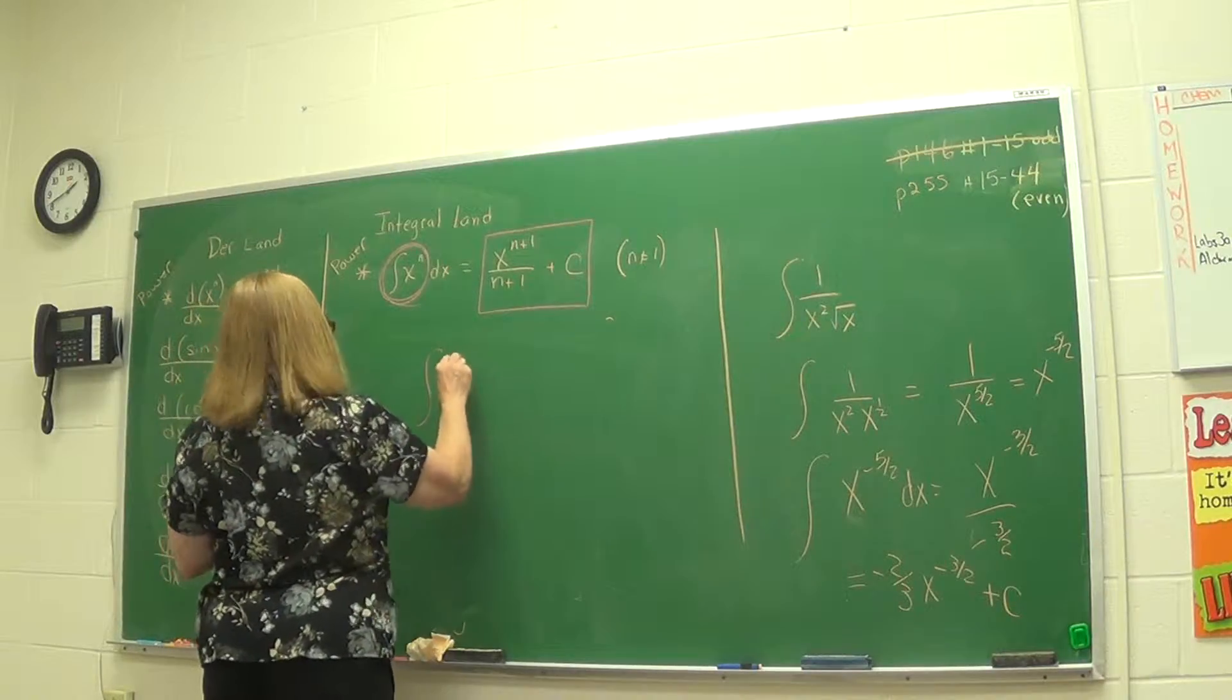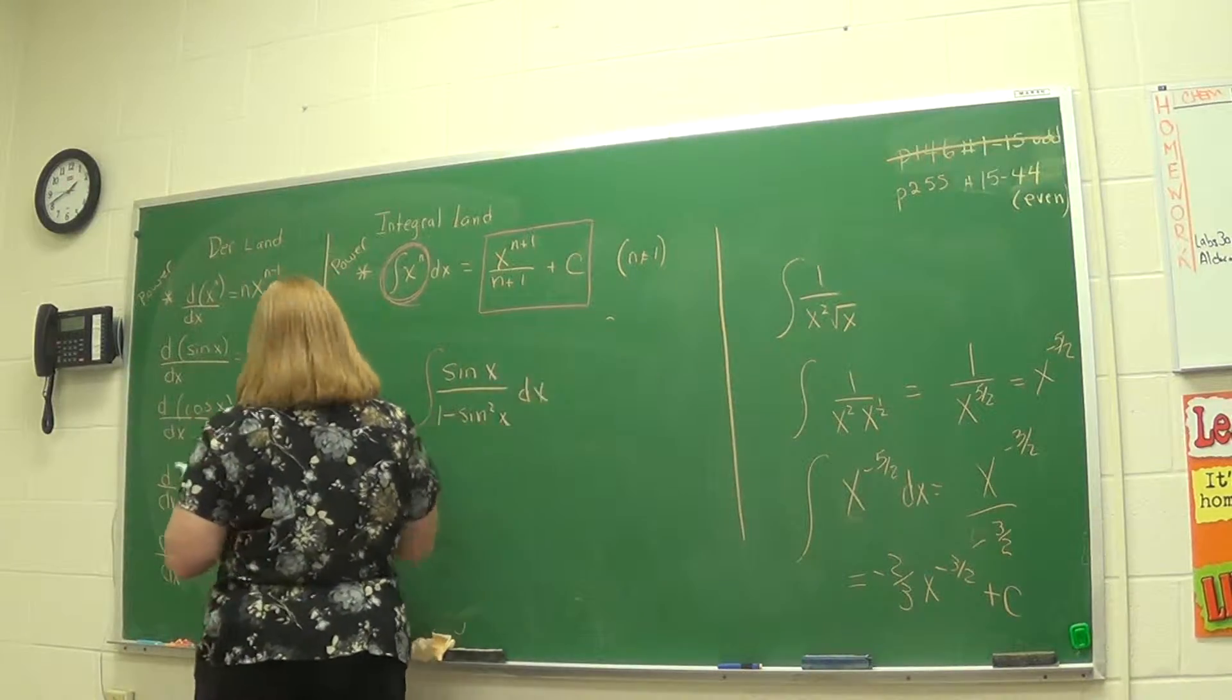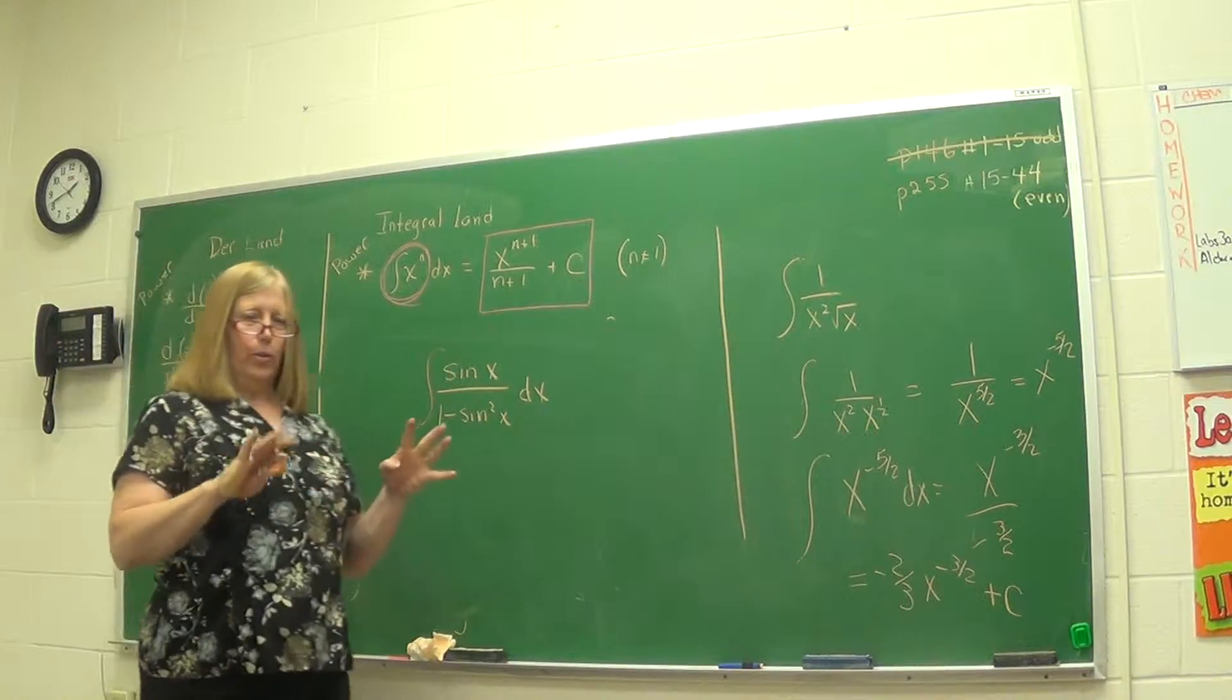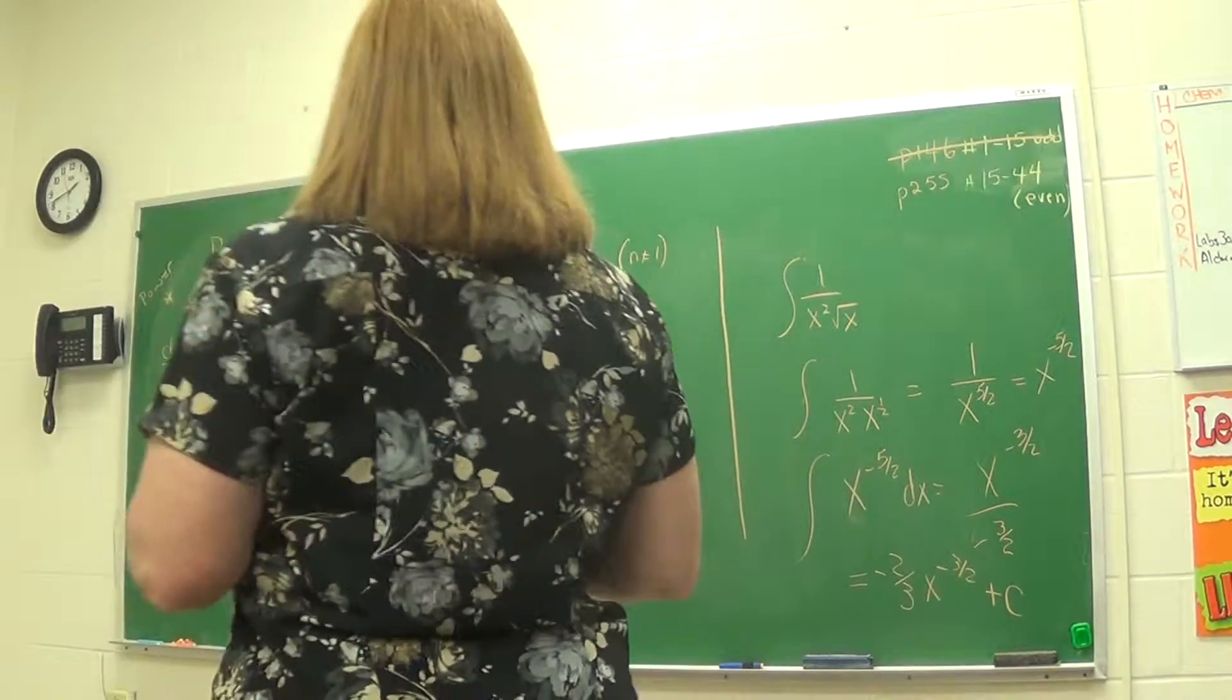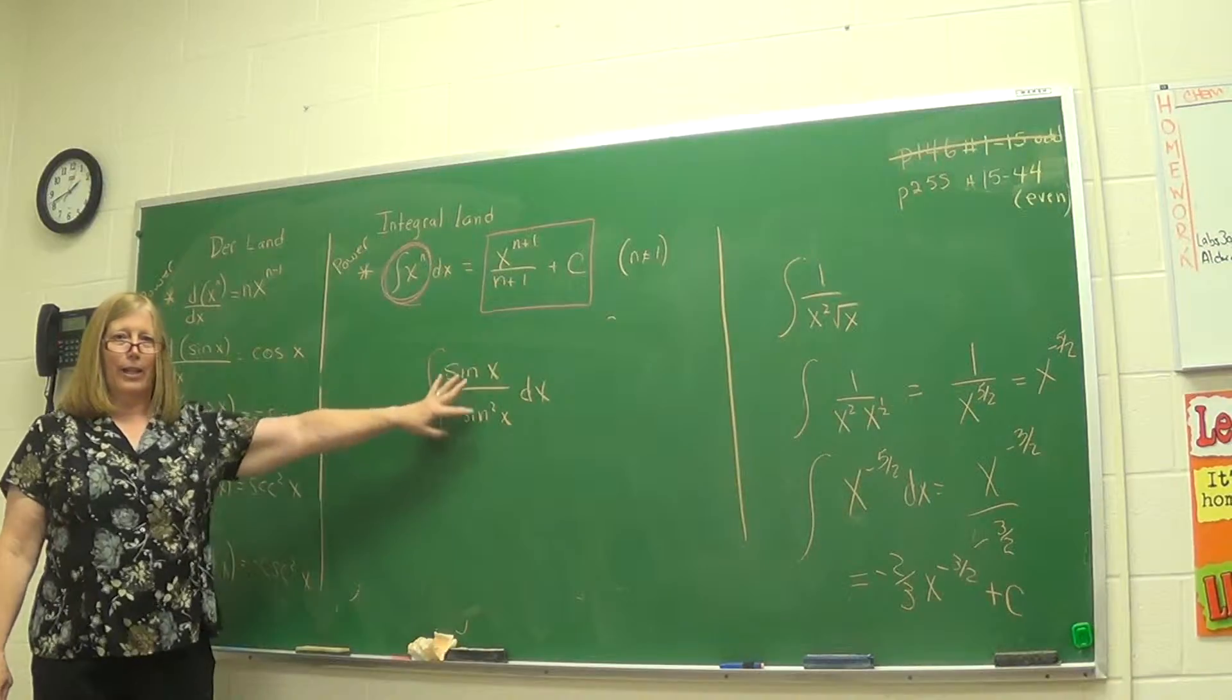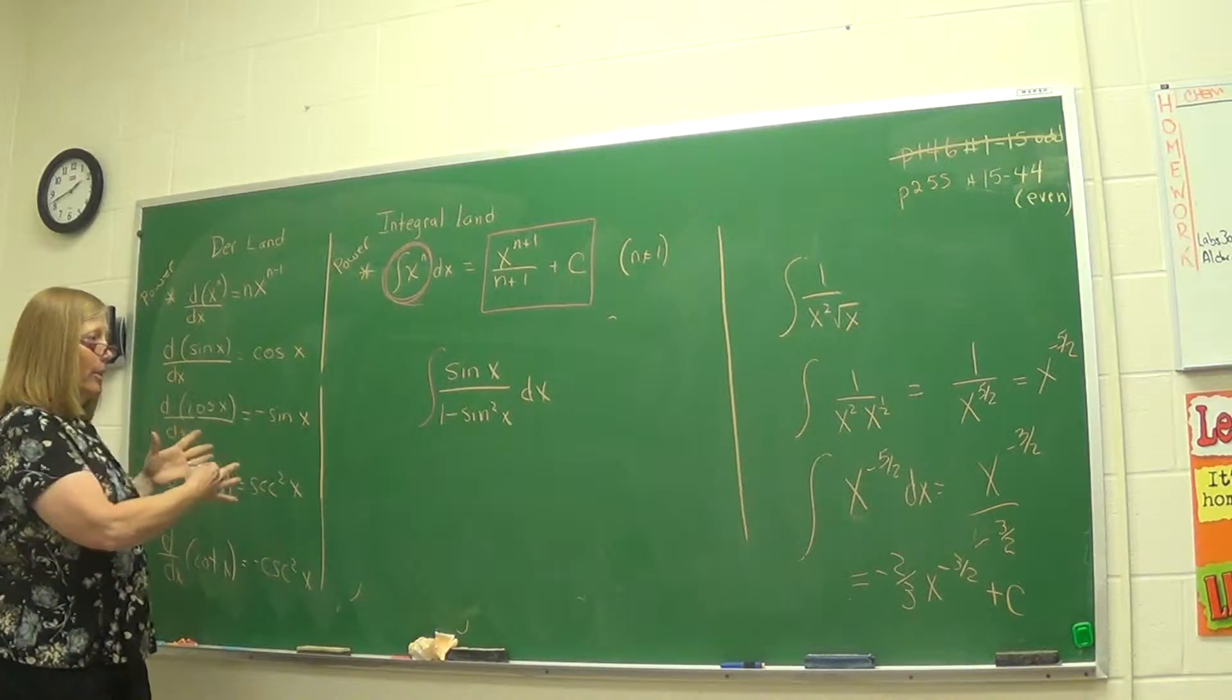Sine x over 1 minus sine squared x dx. Alright. Now the only way I can take the integral if it looks exactly like the ones we did in integral land today. So sine x over 1 minus sine squared x did not appear on any of those integrals. So we have to pull out our snazz again.